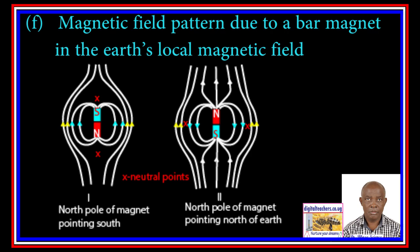F: Magnetic field pattern due to a bar magnet placed in the Earth's local magnetic field. Diagram 1 shows the magnetic field pattern when the north of the bar magnet faces the south of the earth, while Diagram 2 shows when the north of the bar magnet faces the geographical north.